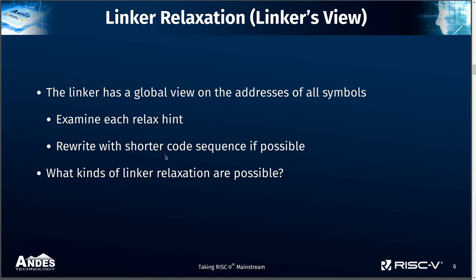From the linker's point of view, the linker has global information about the address of all functions and symbols in the executable. So to perform the relaxation, it simply checks each relaxation hint and determines whether it is possible to replace the code sequence with a shorter one. The philosophy here is that the producer — the compiler in this case — with less information, produces more conservative code. And the consumer — the linker — which has more information, can then optimize the output produced by the previous stage. There are actually many kinds of relaxation, but we will look at two types below.